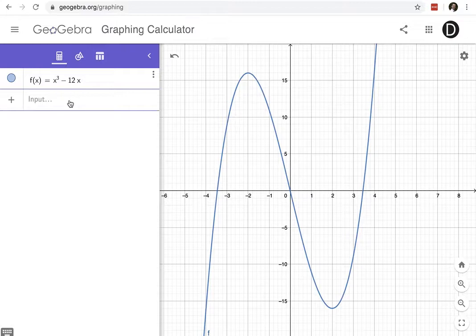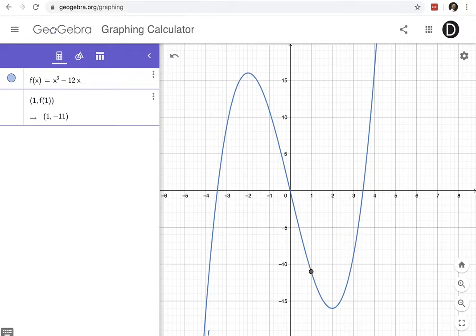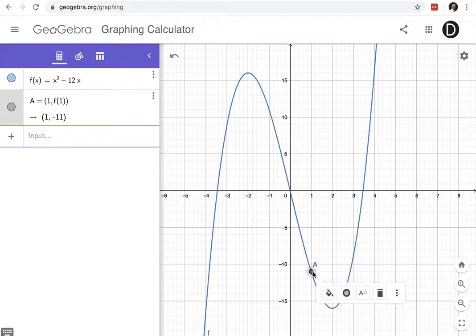So in an earlier video we were looking at a point at x equals 1, so let's create that point again. 1, use the function to find the y value. And so I have this point here at 1, negative 11.